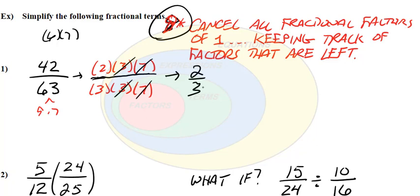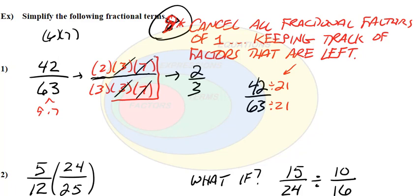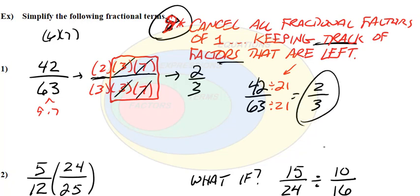A lot of times people look at 42 over 63 and find a number that divides both — they say divide top and bottom by 21. When we look at the factors we canceled, the 3 and the 7, that was the 21. Dividing by 21 is basically canceling those factors from 42. That's why we divide top and bottom by 21 to get 2 over 3. Division is the same thing as canceling fractional factors, but we need to keep track of the factors that are left.